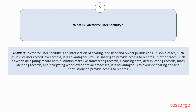Question number five: What is Salesforce user security? Salesforce user security is an intersection of sharing and user and object permissions. In some cases, such as end-user record-level access, it is advantageous to use sharing to provide access to records. In other cases, such as when delegating record administration tasks like transferring records, cleansing data, deduplicating records, mass deleting records, and delegating workflow approval processes, it is advantageous to override sharing and use permissions to provide access to records.